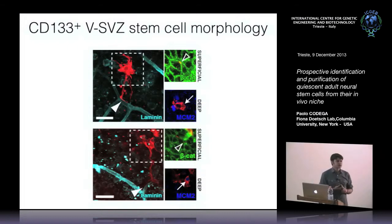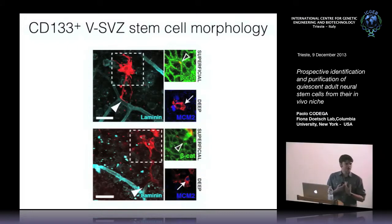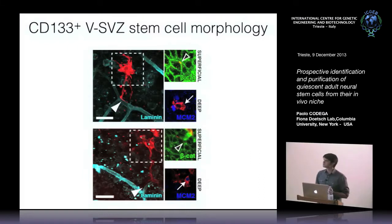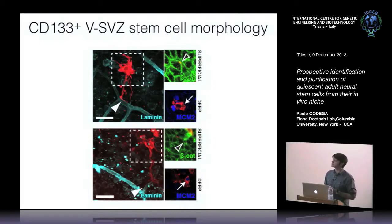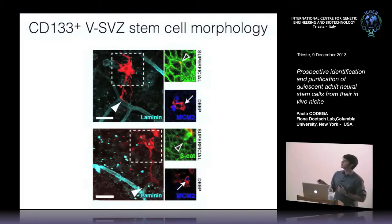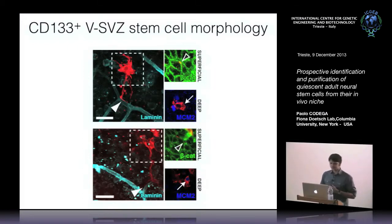Using the proliferation marker MCM2, a nuclear marker expressed in actively dividing cells, we found that both MCM2 negative and MCM2 positive cells were contacting the ventricle at the center of pinwheels and were also in contact with the vasculature via their basal process.